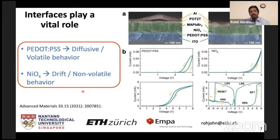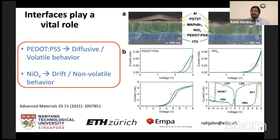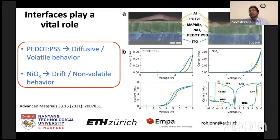Interfaces play a major role because they essentially determine charge transport physics in whatever device you are investigating. In a recently published work, we investigate methylammonium lead bromide along with hole-transporting layers, electron-transporting layers, and PDOT2T, and compare two hole-transporting layers: PEDOT:PSS and nickel oxide. PEDOT:PSS-based devices show very volatile or diffusive behavior — ions pushed to one side drift back to their original state quite fast. However, with nickel oxide, the behavior is more non-volatile and drift-dominated rather than back-diffusion.